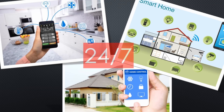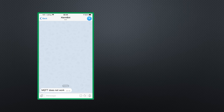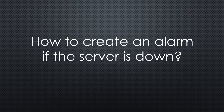Home automation systems have to run all the time. Today, we will make sure you get an alarm on your smartphone if something goes wrong with your system. But how can we create an alarm if the server is down? Let's have a closer look.